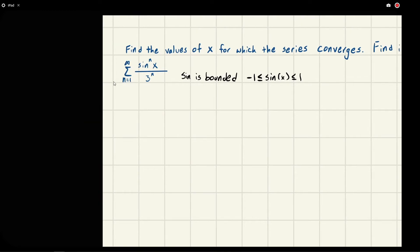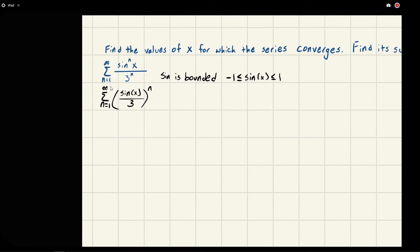I forgot to write the bounds in—it's from n equals one to infinity. So we can rewrite this as n equals one to infinity of sine x over three raised to the n. Algebraically, that's an okay thing to do.